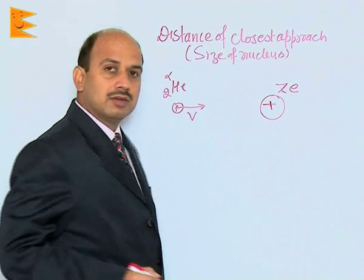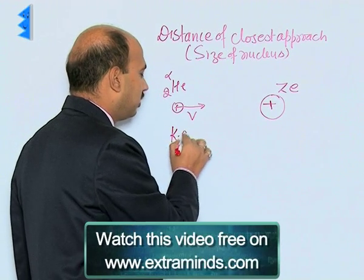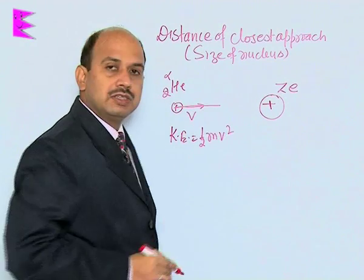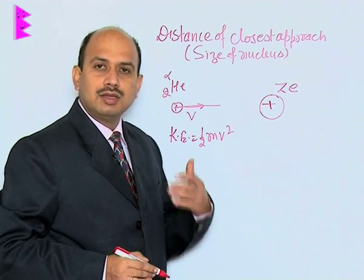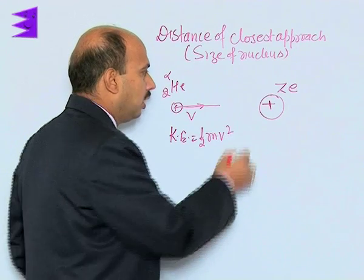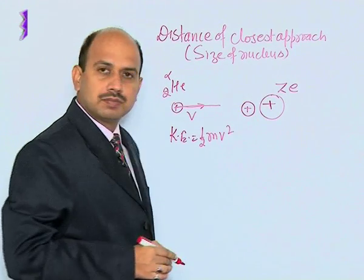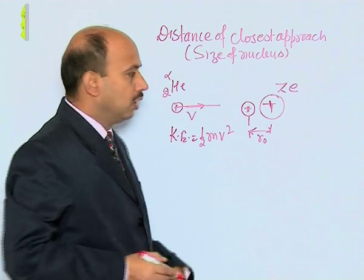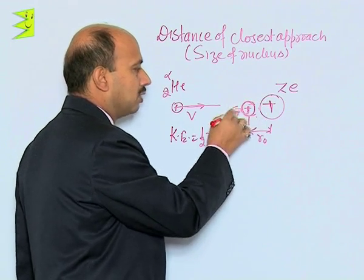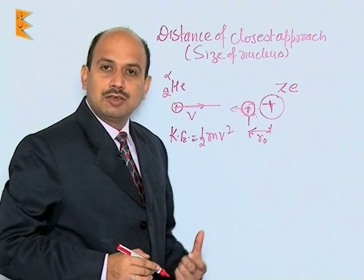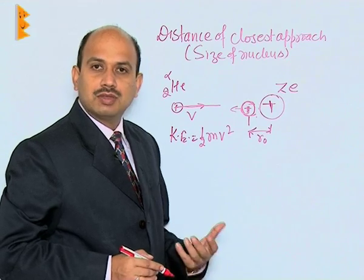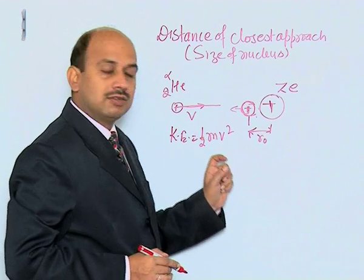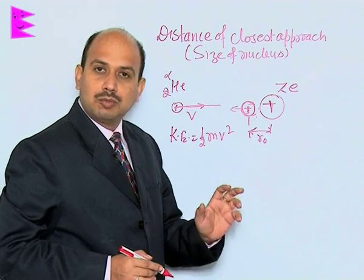When this alpha particle moves toward the nucleus, initially when it is far away it has kinetic energy equal to ½mv². As it moves closer, its kinetic energy converts into electrostatic potential energy, because the kinetic energy is spent working against the Coulombic force of repulsion. When the alpha particle reaches a distance r₀ from the nucleus, it does not touch it — it gets bounced back. At this point, it is assumed that the entire kinetic energy has been converted into electrostatic potential energy.